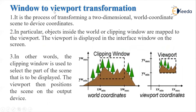Now we see the window to viewport transformation — how the image gets transformed from window to viewport. It is a process of transforming a two-dimensional world coordinate scene to the device coordinate. Objects inside the world or clipping window are mapped to the viewport. The viewport is displayed in the interface window on the screen. There is some scene, and we see a specific part of that scene using the window, which is a rectangular area. We display the area within the window to the display device, that is to the viewport coordinate. We call this the viewport when we display it on the viewport coordinate.